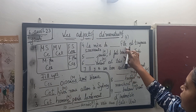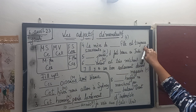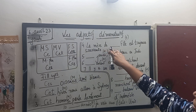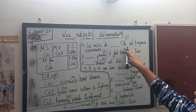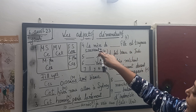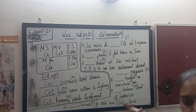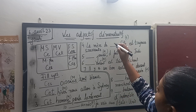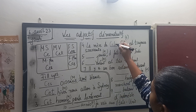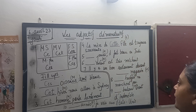Fourth sentence: La maman de dash fille est toujours souriante. The mother of this girl is always smiling. 'Fille' means girl and it is feminine singular, so we will put C-E-T-T-E.